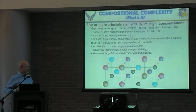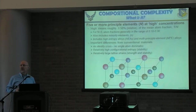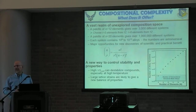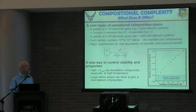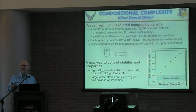This is a relatively new way of looking at materials, and it offers a number of different things. One of the things that brought it to people's attention is that it has a relatively high configuration entropy that influences stability, and it can also have relatively large lattice strains which influence properties in ways still to be determined. What does it offer us? It offers a new way to control stability and properties, but more importantly, it opens a vast realm of composition space that's never been considered before.